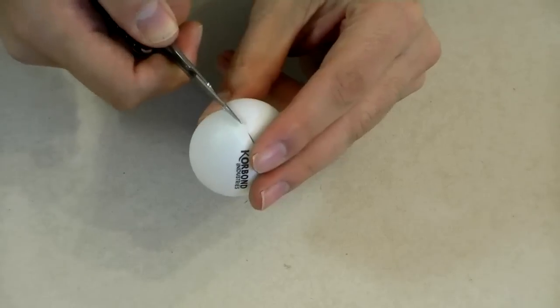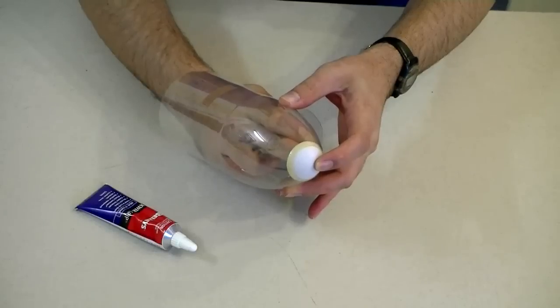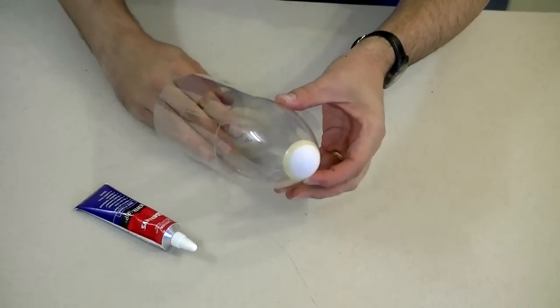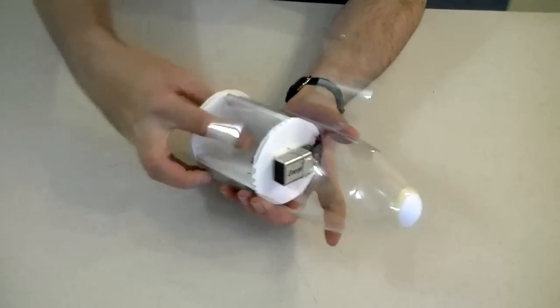Cut out the left side of a ping pong ball and glue that in place. Insert the mechanism into the shell.